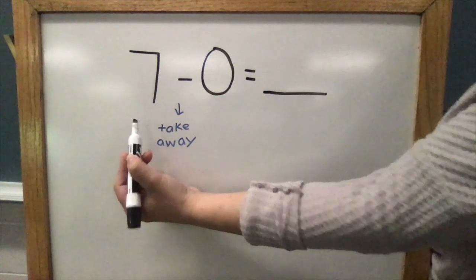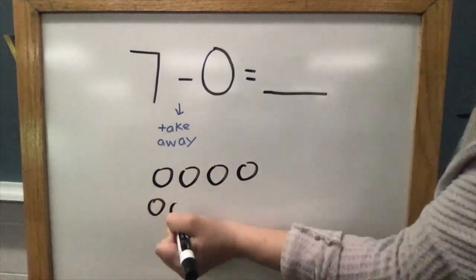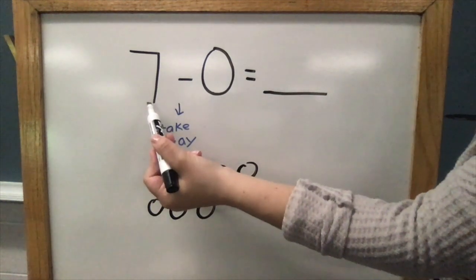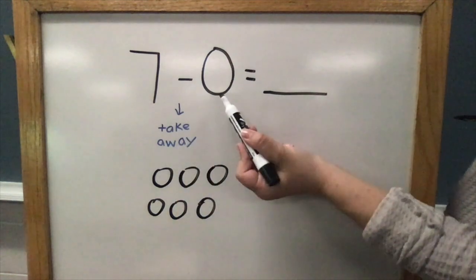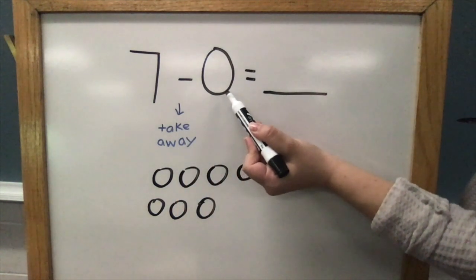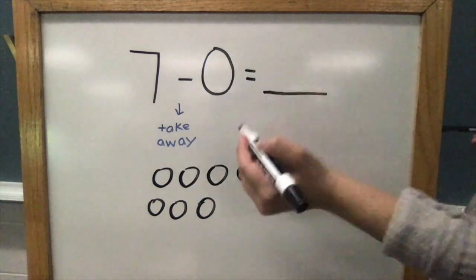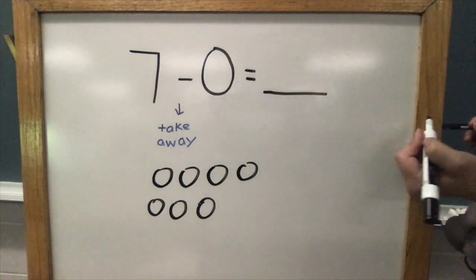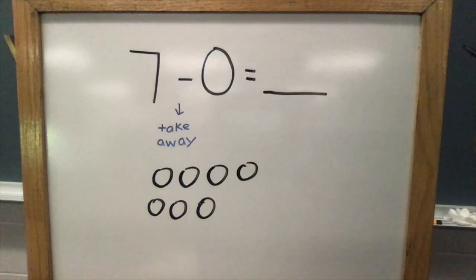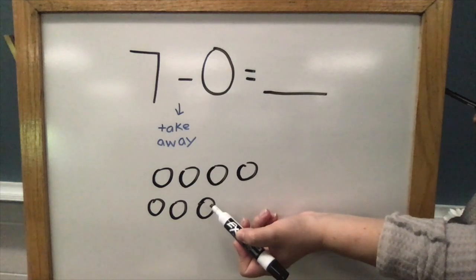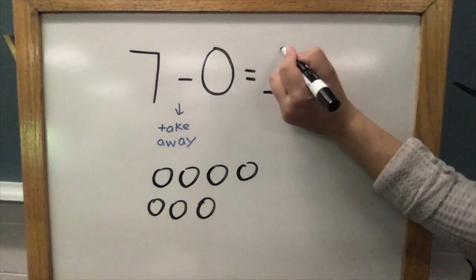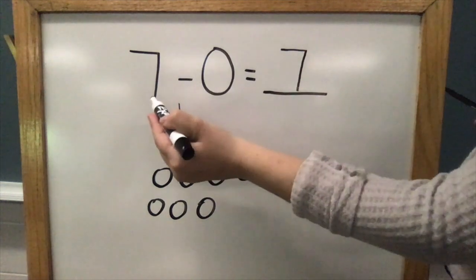Now that I have my seven counters, I need to take away zero. Hmm, since zero means none, that means I don't take any away. I had seven, I took away none, I still have seven. 7 - 0 = 7.